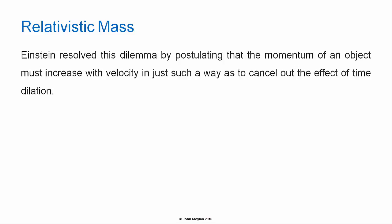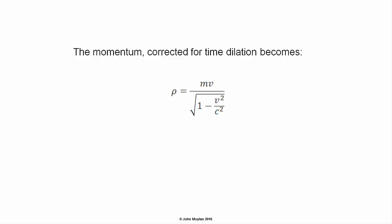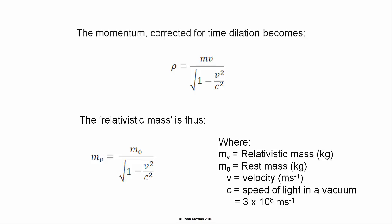Einstein resolved this dilemma by postulating that the momentum of an object must increase with velocity in just such a way as to cancel out the effect of time dilation. According to Einstein, the inertial mass of a body is not a constant but varies with the energy of the body. The momentum corrected for time dilation becomes: p = mv / √(1 − v²/c²). The relativistic mass thus becomes: m_v = m₀ / √(1 − v²/c²). If v² equals c², the relativistic mass effectively becomes infinite.